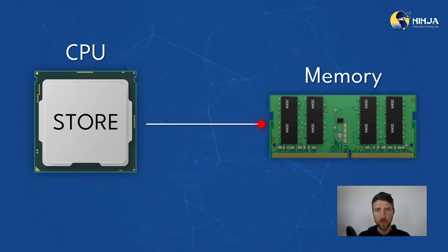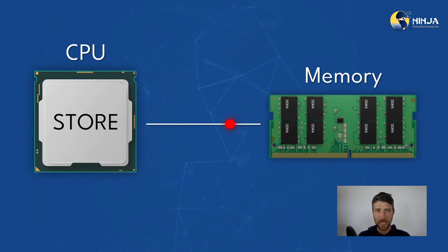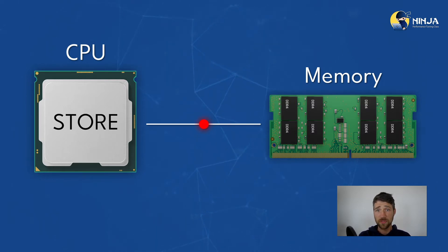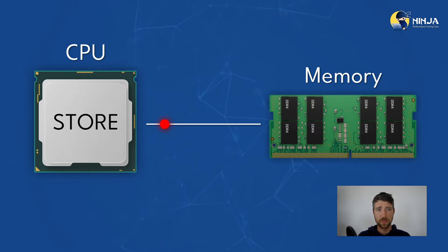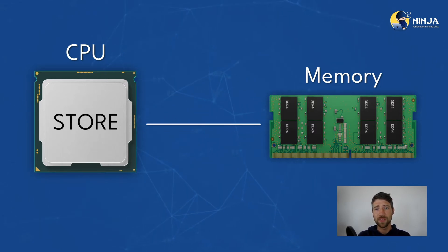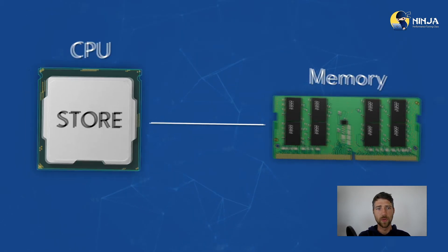To improve performance of such an application, we need to improve the way we access memory, reduce the number of such accesses, or upgrade the memory subsystem itself. But the main point here is that the memory subsystem is very important for software performance.